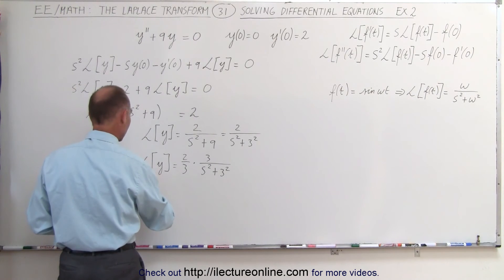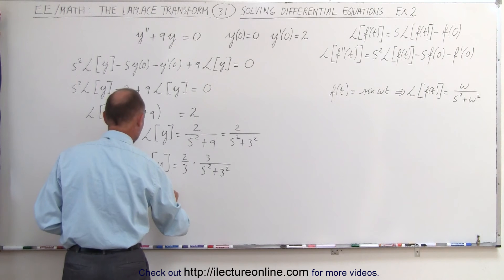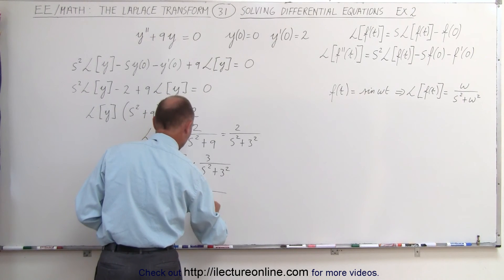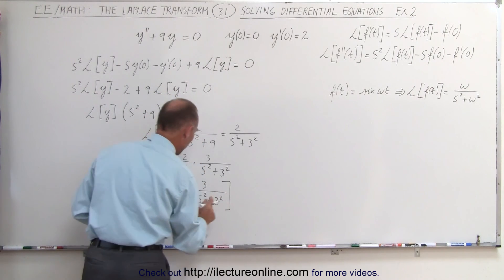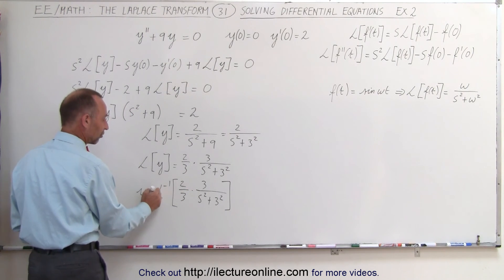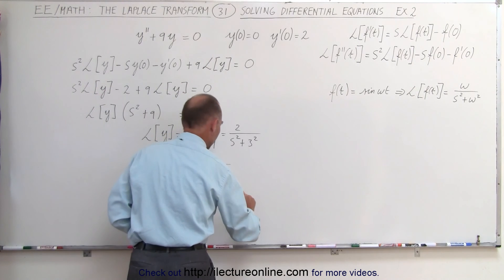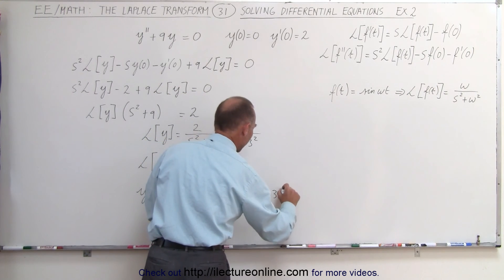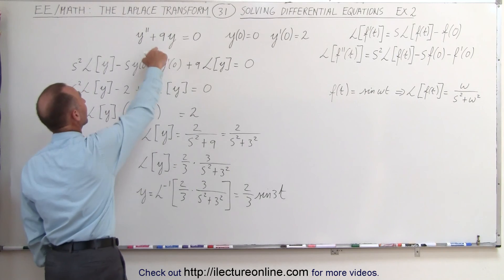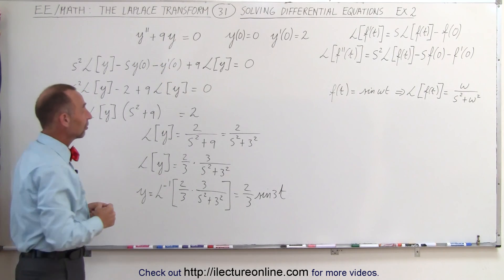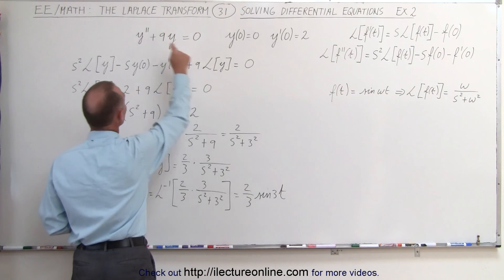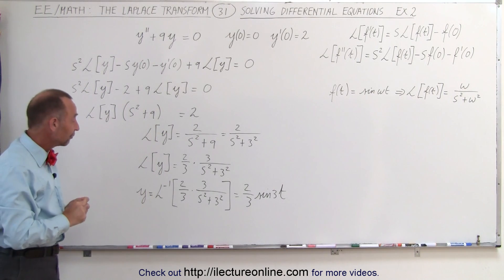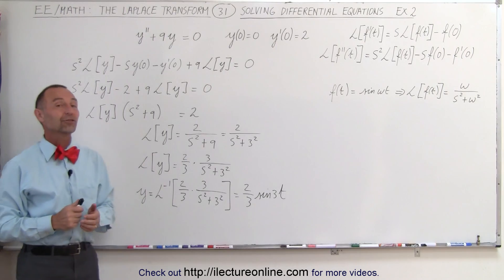Notice that if I cancel out the 3's I end up with exactly what I started with, but now I realize that this can be transformed back using the inverse transform to the sine of omega t, where omega is equal to 3. So therefore y, which is equal to the inverse transform of 2 thirds times 3 over s squared plus 3 squared — and remember the constant can be taken out — this equals 2 thirds times the sine of omega t, and omega in this case is 3. And so this is the actual function. If you plug that back into the differential equation and take the second derivative, then add 9 times the function itself, that will equal 0 — so therefore this is a solution to our original differential equation.